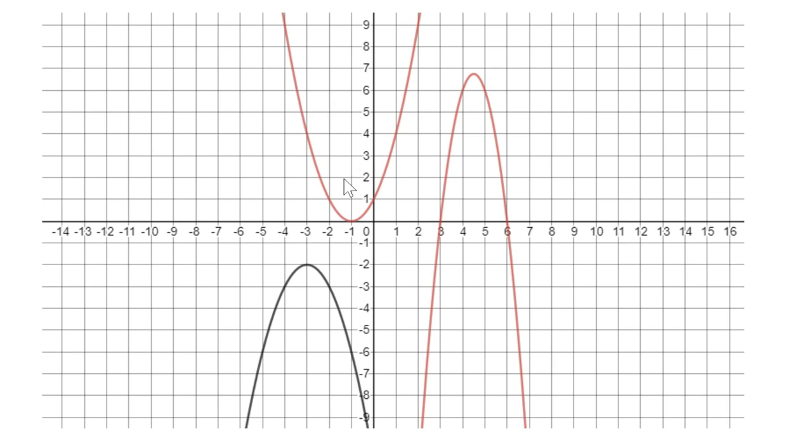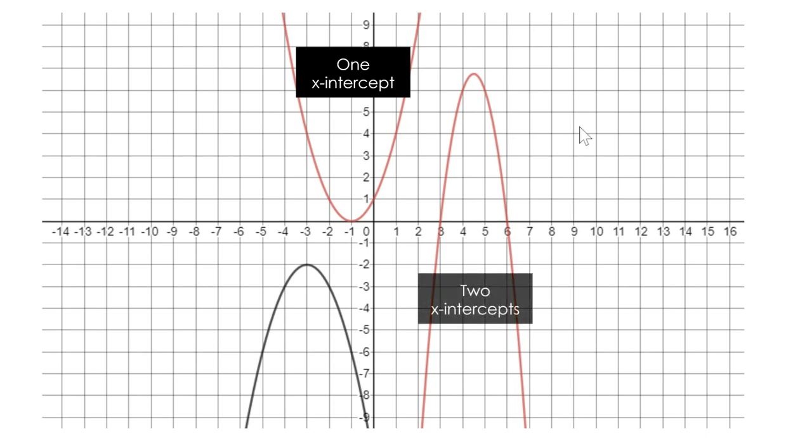This one up here, this is a perfect square, where our y value or k value is 0. This one has one intercept. This would be x plus 1 squared since my a value is 1. This one over here has two x-intercepts. This can absolutely be factored. It has two x-intercepts and I could account for my a value and then use my factors to figure out my equation.